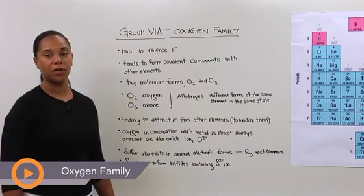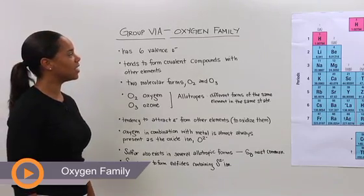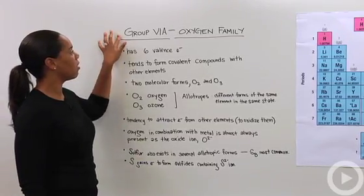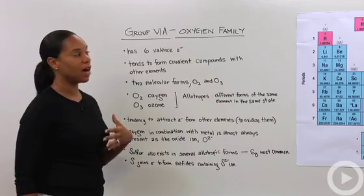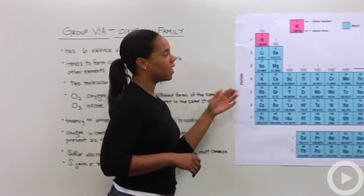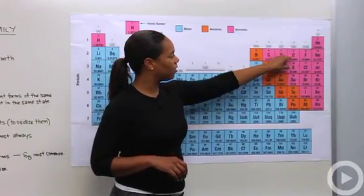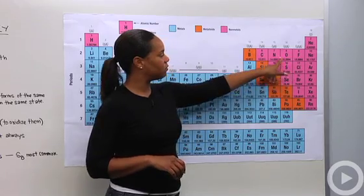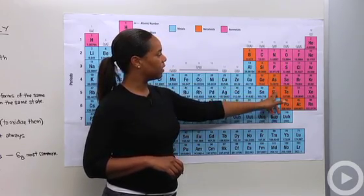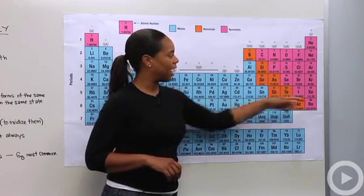Let's continue talking about the periodic table and the elements contained therein. And let's focus on group 6A, which is the oxygen family. So let me go ahead and just point that out over here on the periodic table, right here smushed in between the nitrogen family and the halogens.